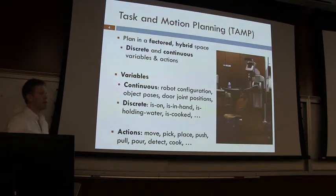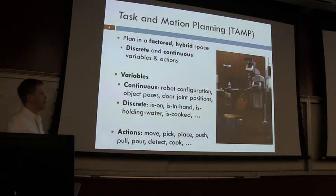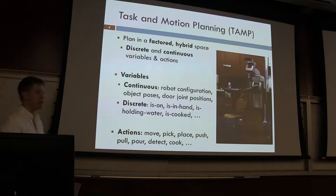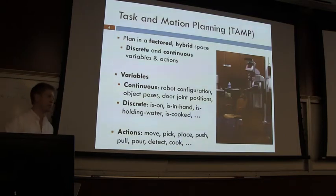Each of these spaces may be continuous or discrete. For a robot moving around a human world, continuous variables include the robot's configuration, object poses, and door joint positions. Discrete variables include whether something is on something else, whether something is in the robot's hand, whether something is holding water, or whether something is cooked. We'd like to develop algorithms that can plan for a diverse set of manipulations such as movement, picking, pouring, scooping, pushing, and detecting.